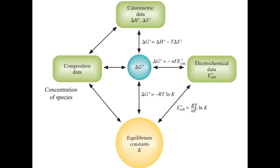So what you can see here is, in essence, we have the four main outputs, which is the E cell, that's the electrochemical data, we have the equilibrium constant, we have calorimetric data, delta H and delta S. And then we have composition data, which is what the equilibrium mixture would look like, the products over the reactants.